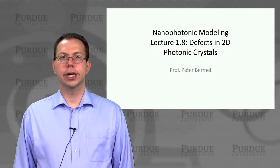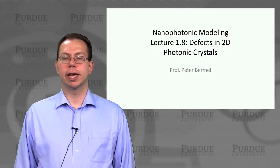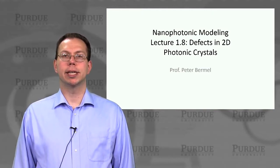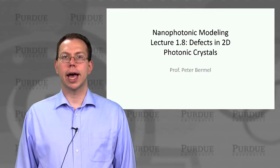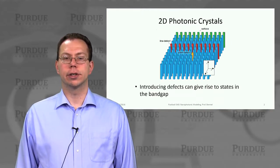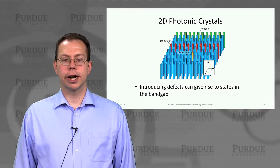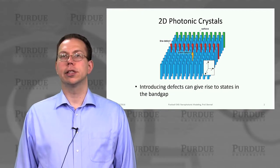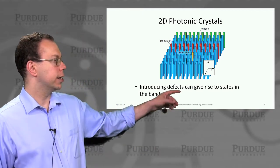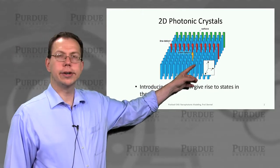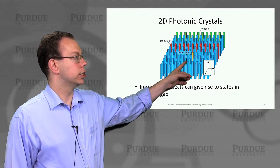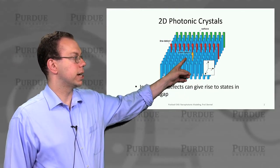Continuing on the theme of 2D photonic band structures, we're actually going to look at what happens when you add defects into the photonic crystal band structure. Here we're illustrating three types of defects all in one convenient diagram. You don't necessarily need to have all of them at once, but we want to show all of the possibilities.